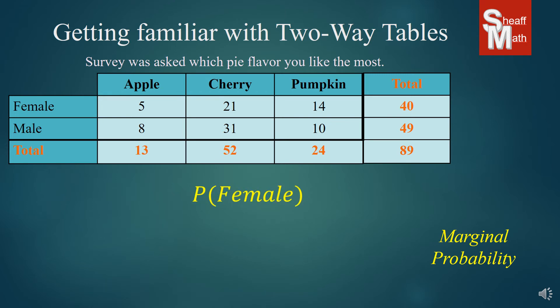Here's another marginal probability. What's the probability of you picking a random person with your eyes closed and it being a female? According to this survey, there were 40 females out of a total of 89. So we have a 40 out of 89 chance of just randomly asking a female.